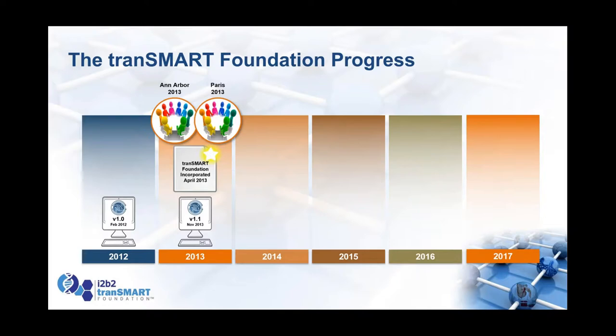It wasn't an easy process because when we stepped back and started thinking about 1.2, we had about 12 code streams in GitHub that needed to get pulled back together. And so we started to think about how to actually manage this thing going forward.